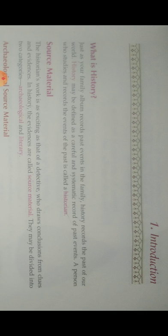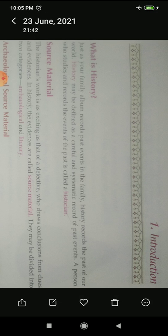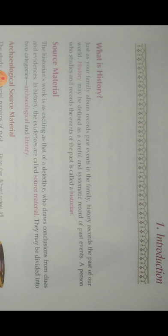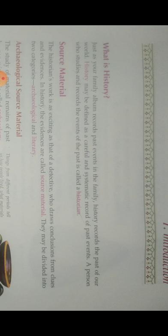First, we discussed about the definition of history. What is history? History may be defined as the careful and systematic record of past events. It is a record of past events. And who is a historian? The person who studies and records the events of the past is called a historian.